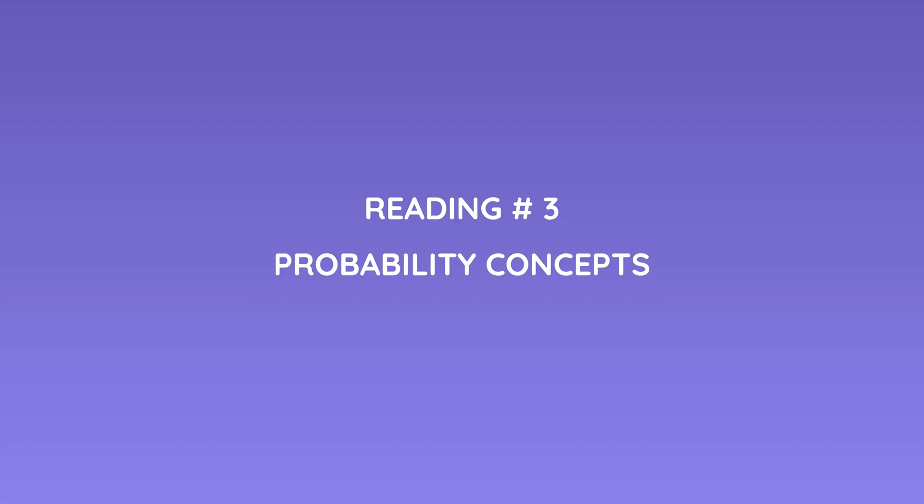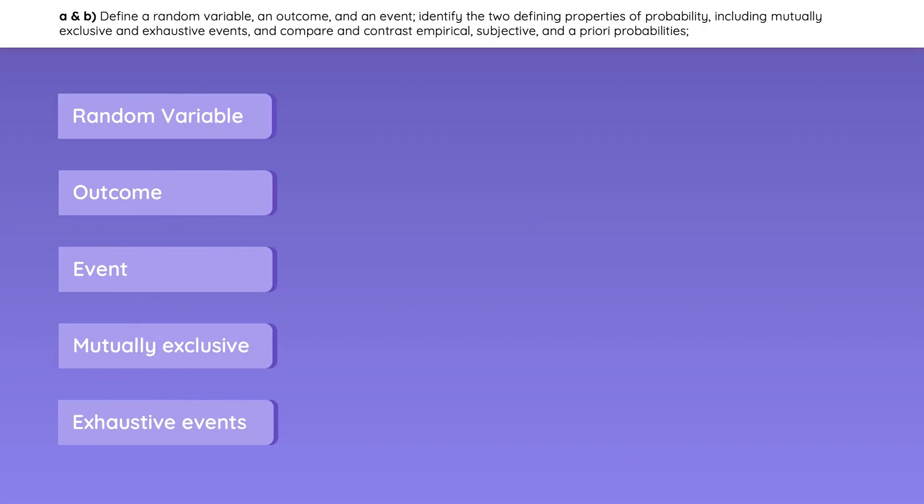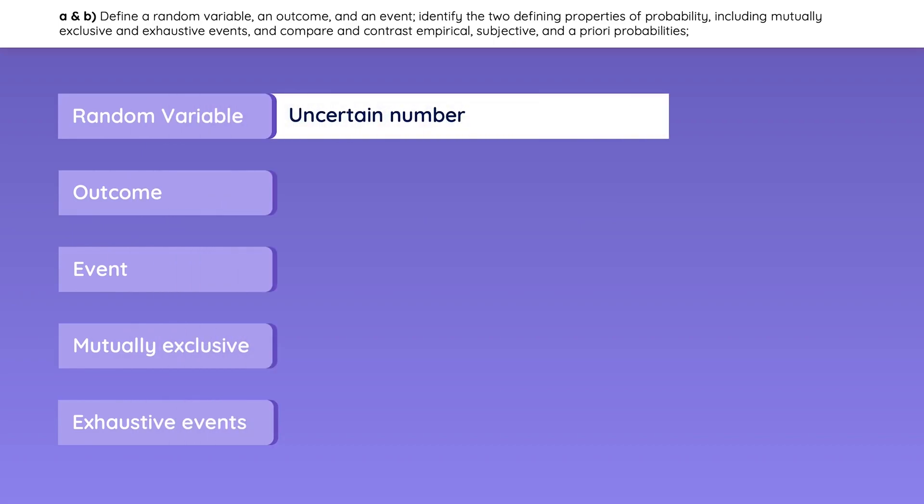This next reading focuses on probability, so let's begin with some key terms. A random variable is an uncertain number.